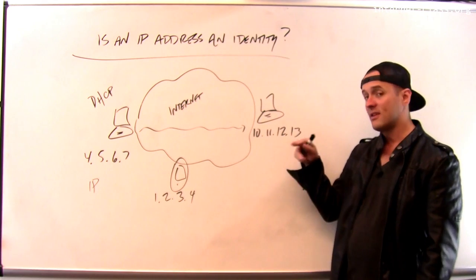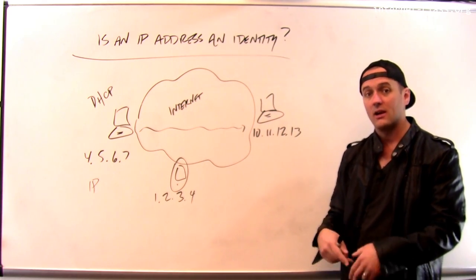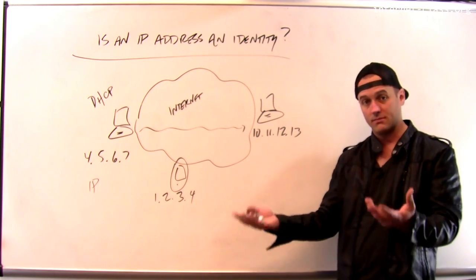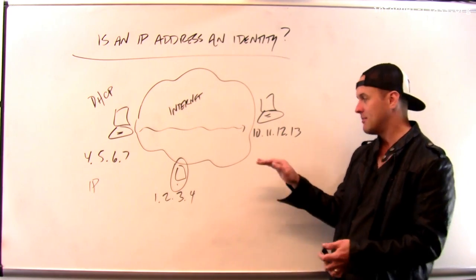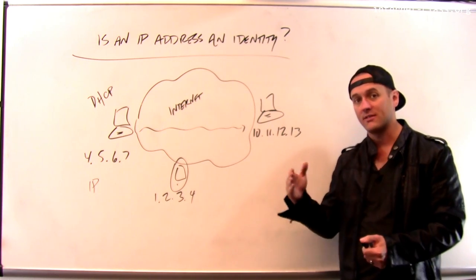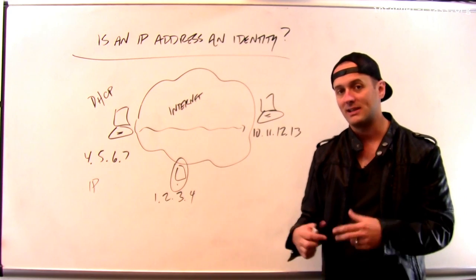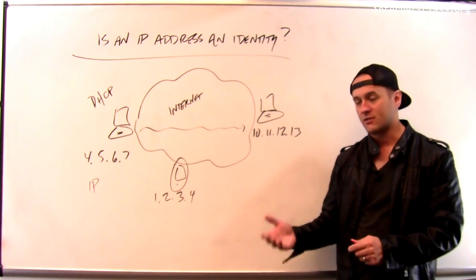Now, again, the MAC address is seen by potentially the person who assigns you an IP address. And so if you're at school, your school may know the mapping between your IP address and the MAC address of your machine. And that may be another way that they would try to find you if you did something really damaging or very destructive.